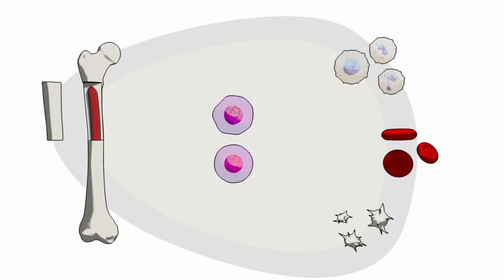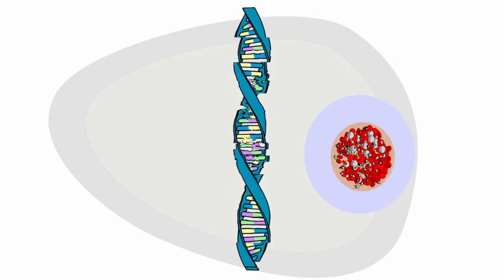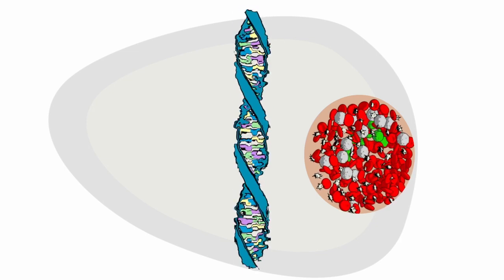In AML, something goes wrong with the DNA in bone marrow cells causing normal bone marrow cells to become leukemia cells.